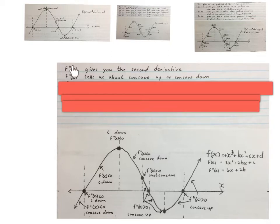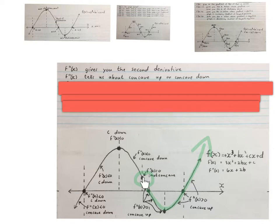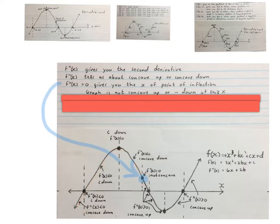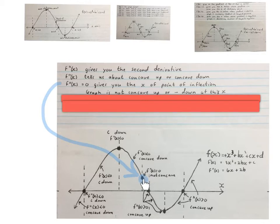Lastly, we're going to look at the second derivative, f''(x). It tells us about the concave up or concave down of our graph. This graph is concave up over here, excluding that point, and concave down over here, excluding that point. The second derivative equal to zero gives you the x value of the point of inflection — the graph is not concave up or concave down at this x value. That gives us the x value in the middle between the two stationary points.